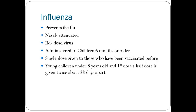Influenza vaccine prevents the flu. There is the nasal form, which is an attenuated virus, and the intramuscular form, which is a dead virus administered to children six months of age or older. A single dose is given to those who have been vaccinated before. Someone who has never received an influenza vaccination may require two doses. For young children under eight years old, the first dose is a half dose given twice, about 28 days apart.